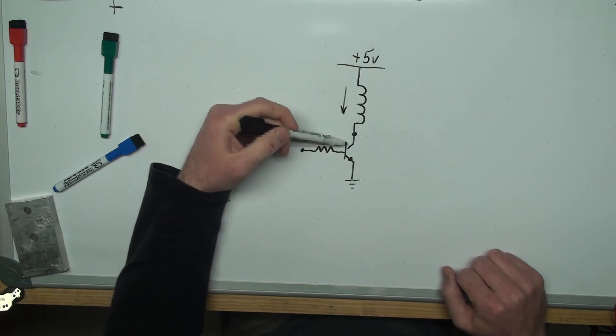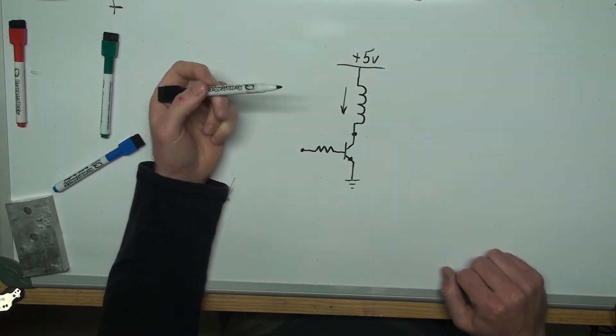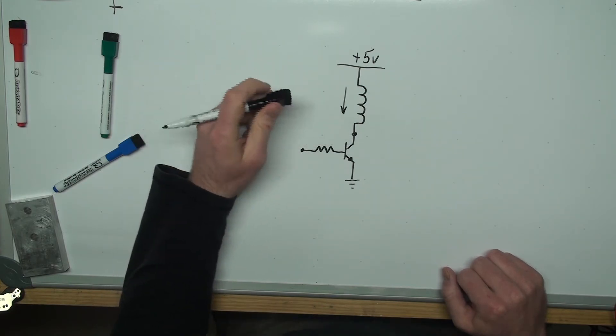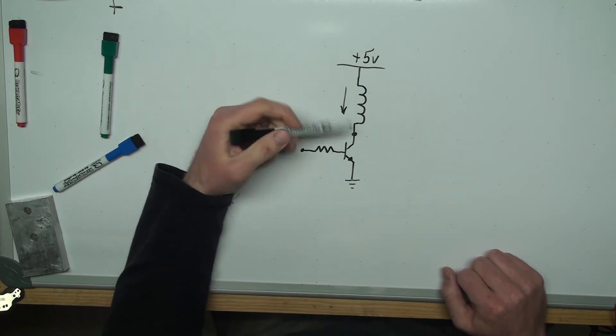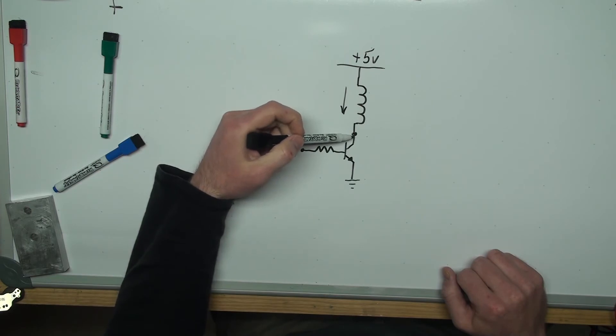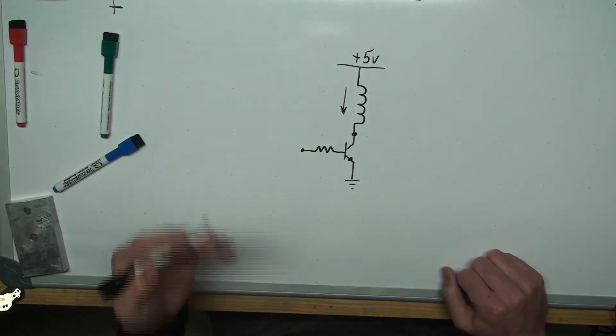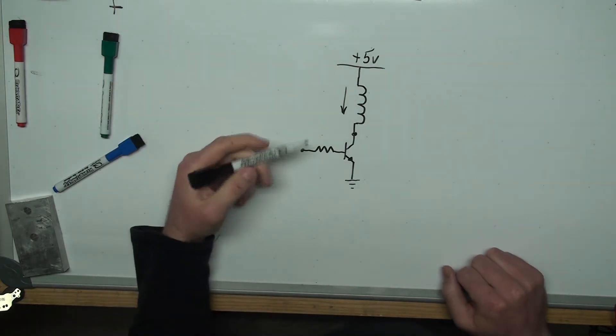That can be enough to damage this transistor very quickly. So in this demonstration I'll show how this will become a voltage that you would not generally expect.